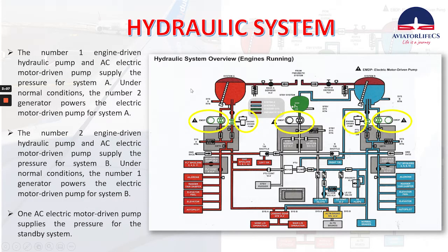System B supplies pressure for the standby system. The number one engine driven hydraulic pump and AC electric motor driven pump supply the pressure for system A. Here in this circle you can see the electric motor driven pump, and this is the engine driven pump for system A.